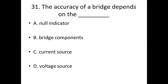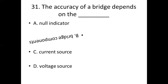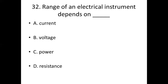Thirty-first bit. The accuracy of a bridge depends on the dash. Option A: null inductor. Option B: bridge components. Option C: current source. Option D: voltage source. Answer: Option A, null inductor.